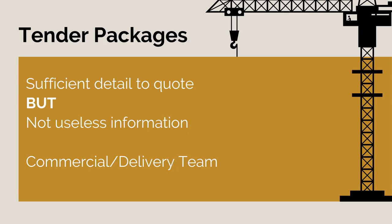When preparing a tender package, we want to include enough information to accurately define a potential subcontractor's scope of works — we need to clearly specify exactly what we require them to do. However, we don't want to overwhelm them with unnecessary and useless information. It's a balancing act. We can't issue every single project document, as most wouldn't be relevant and make no material impact on them. We need to give them the information they need, but not a whole bunch of irrelevant junk. The preparation of tender packages will be a team effort, involving the construction team and the commercial team, as procurement is a multi-disciplinary process that requires input from both technical and commercial teams.